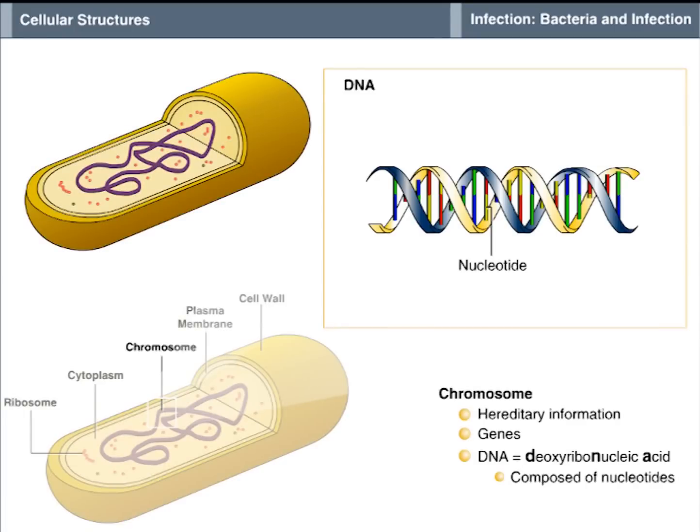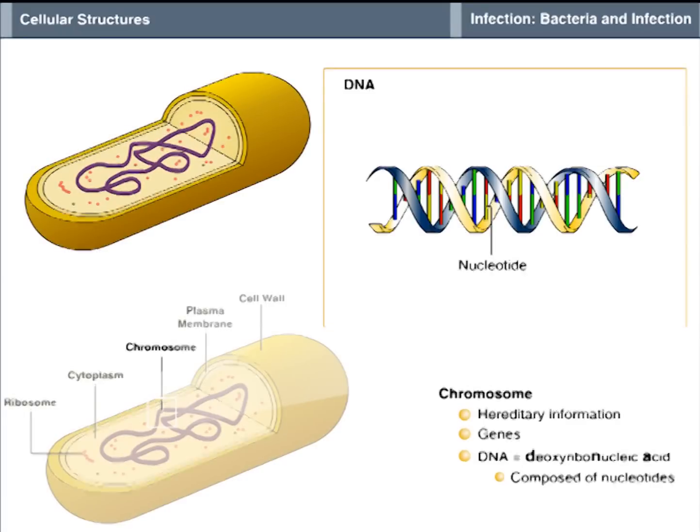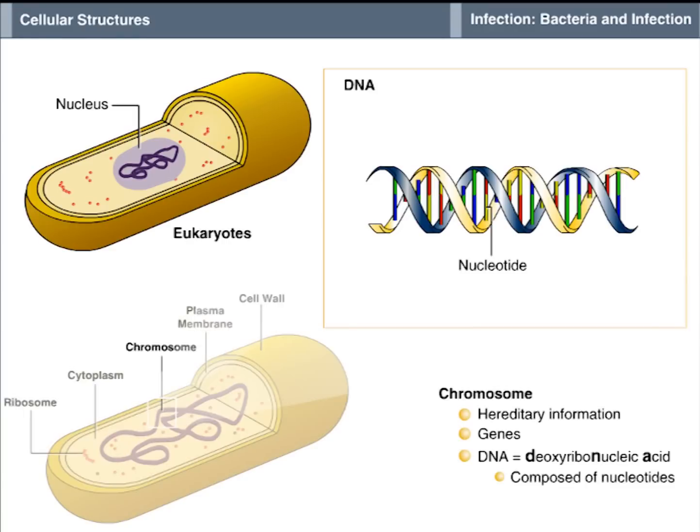DNA carries the codes for reproducing specific proteins which determine characteristics or functions of the organism. In higher organisms, such as humans and plants, chromosomes are enclosed in the cell nucleus. Therefore, these organisms are called eukaryotes. In contrast, bacterial cells are prokaryotes since they lack the cell nucleus.